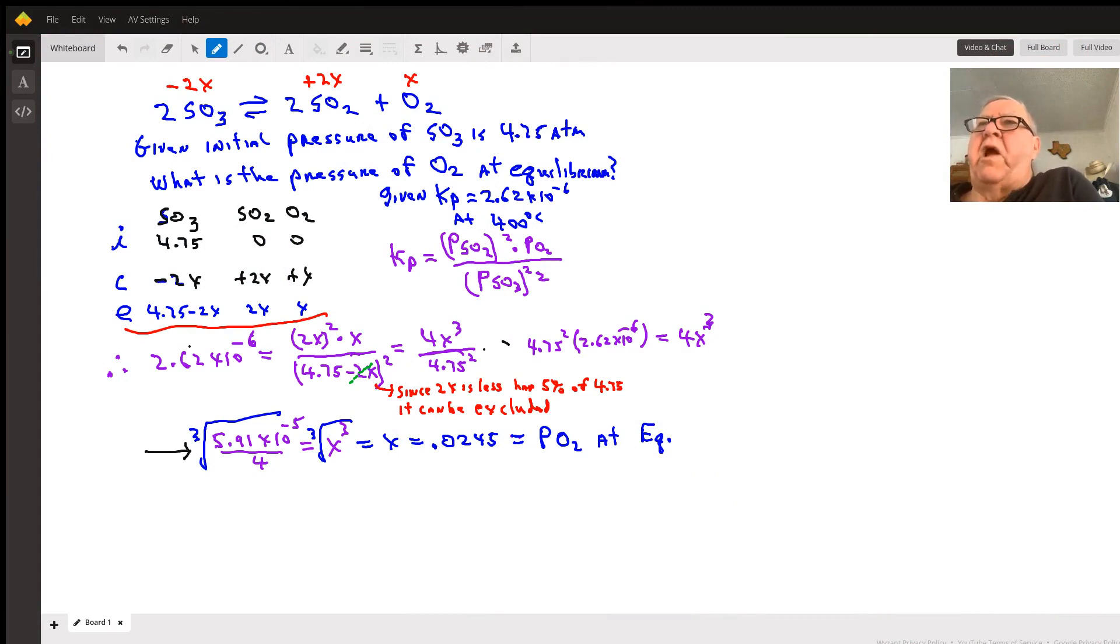This is a very interesting problem on equilibrium when we're looking at K sub P, the pressure equilibrium constant for this given reaction of two moles of sulfur trioxide being converted and producing two moles of sulfur dioxide plus one mole of oxygen gas. It's a reversible reaction, so we can write the expression for K sub P as underlined.